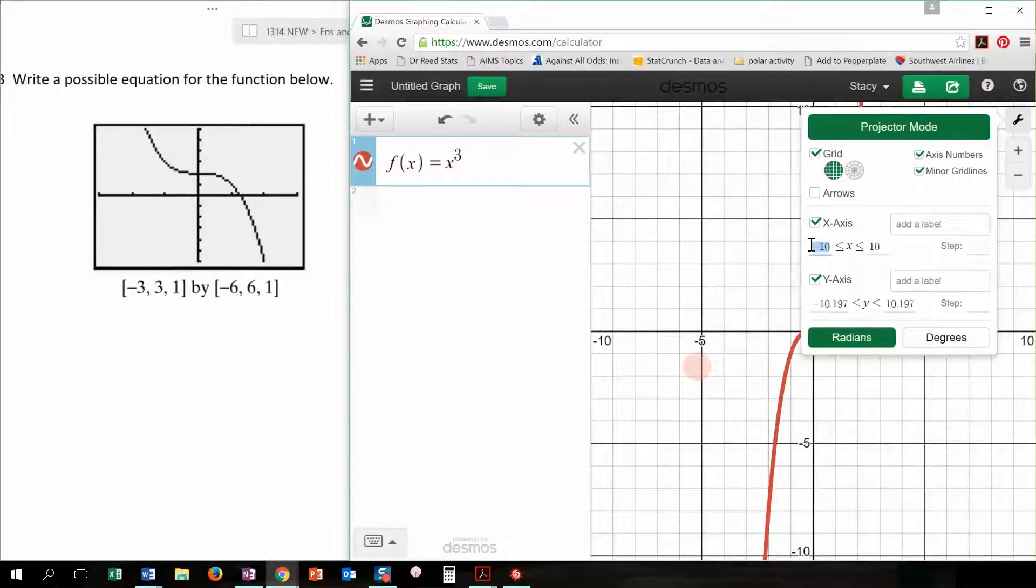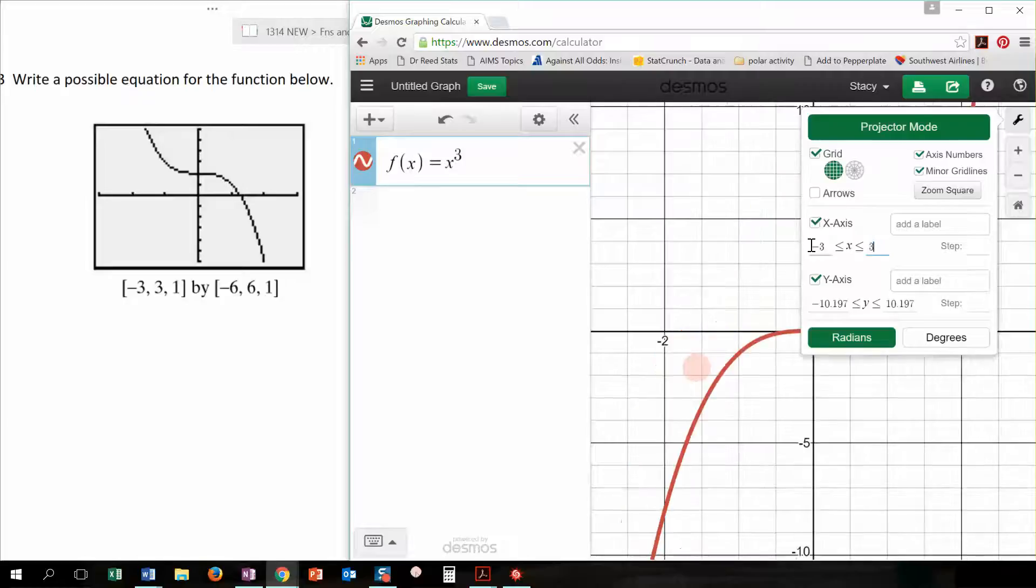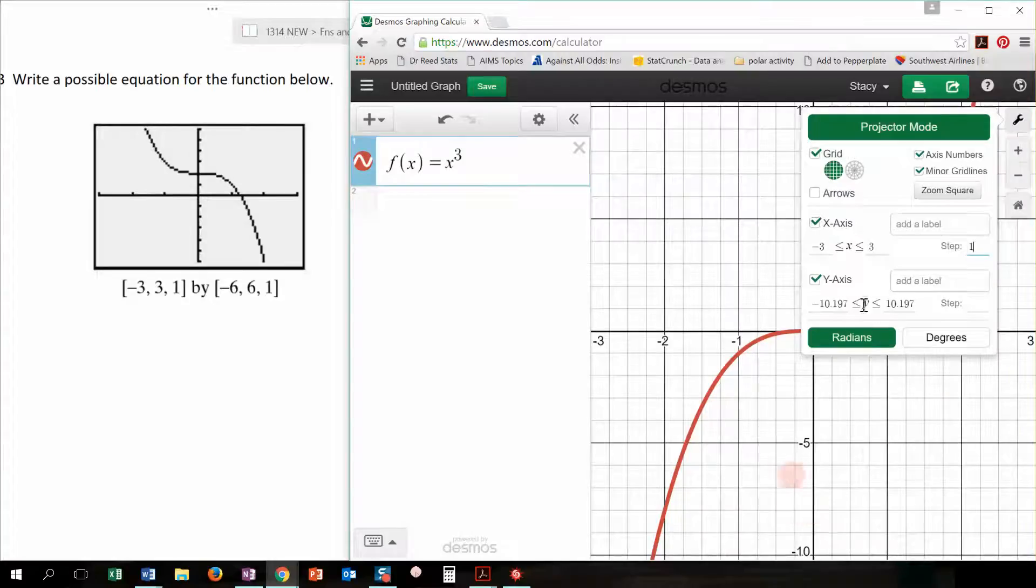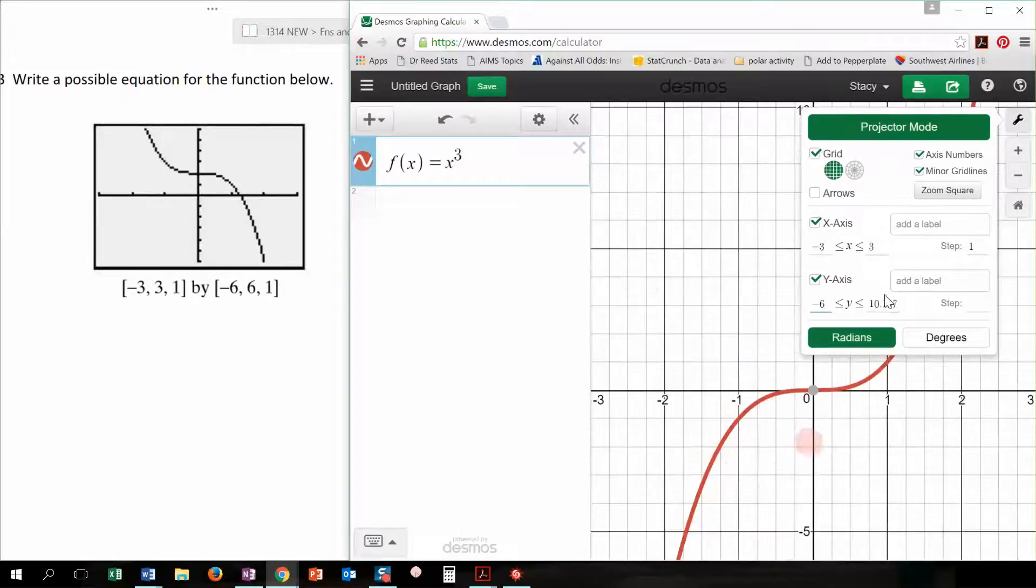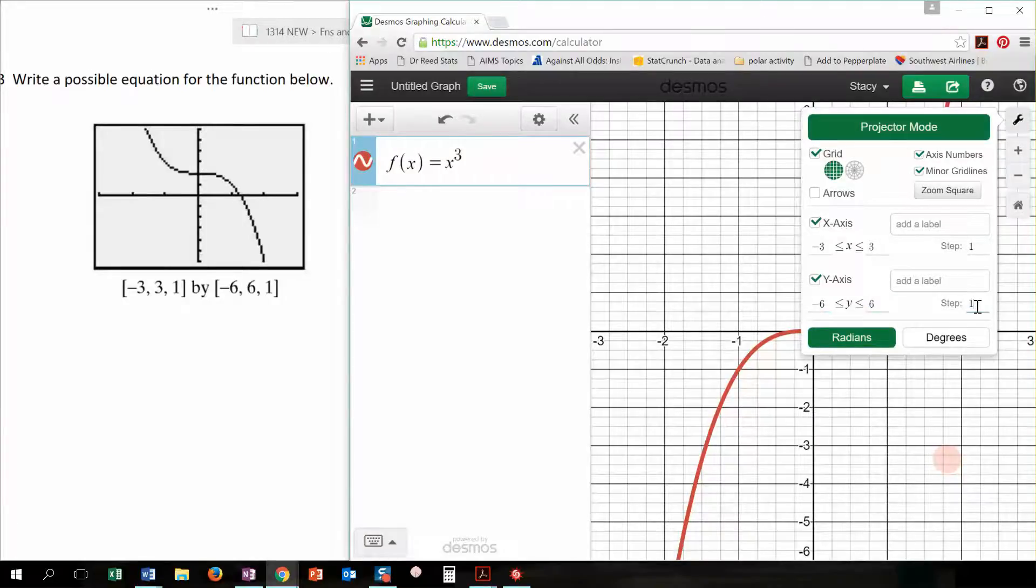And down here I can adjust my x and my y axes. So I'm going to change this to a negative 3 and a positive 3. It automatically... I'm going to leave the steps like they are. Maybe I'll change it. We'll change it to 1s. And then the y axis, I'm going to change to negative 6 to positive 6. I don't think I need to change that to 1, but I will anyway.